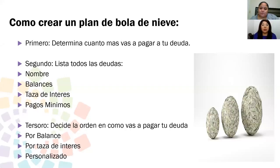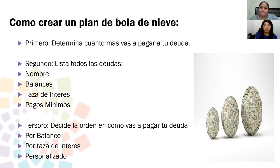¿Cómo crear un plan de bola de nieve? Primero, determina cuánto vas a pagar en tu deuda. Segundo, lista todas sus deudas: pon el nombre del acreedor, balance, tasa de interés, y cuál es el pago mínimo requerido. Tercero, decide el orden de cómo vas a pagar tu deuda — si vas a comenzar por el balance, por la tasa de interés, o si lo vas a personalizar. Aquí está el ejemplo: una bola más pequeña convirtiéndose en más grande, cancelando esa deuda.